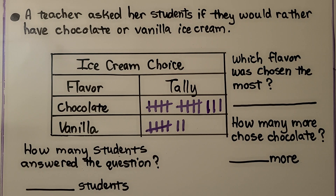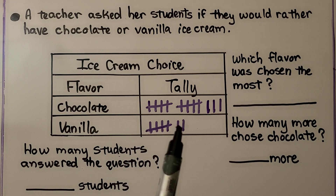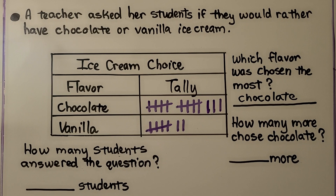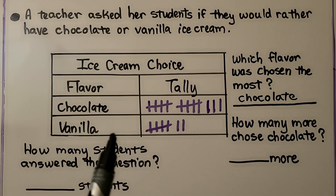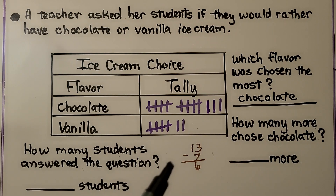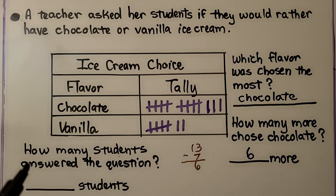Which flavor was chosen the most — chocolate or vanilla? We can look at the tally marks and see there are more chocolate tally marks than vanilla, so the flavor chosen most was chocolate. How many more chose chocolate? Chocolate has 5, 10, 11, 12, 13 and vanilla has 5, 6, 7. We subtract 13 minus 7 to find the difference: 13 minus 7 is 6, so 6 more chose chocolate. How many students answered the question?